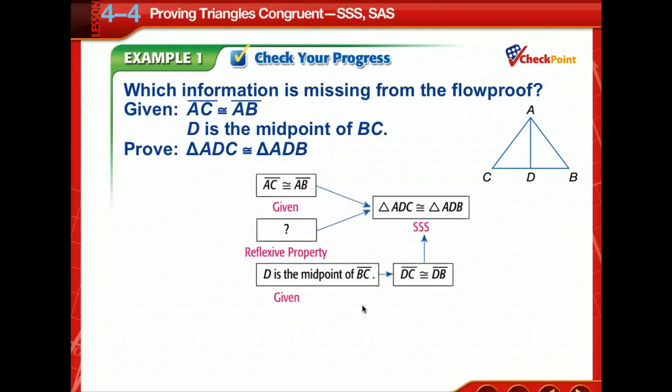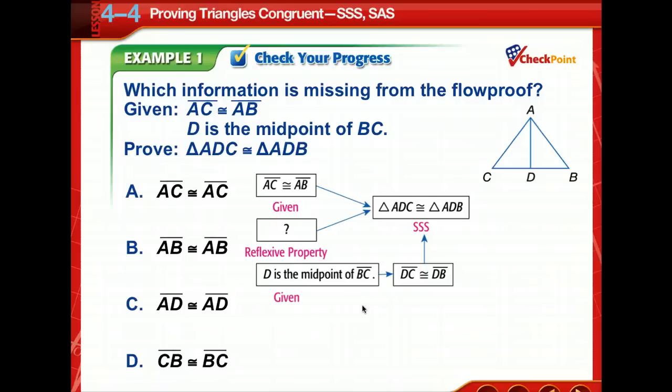Okay, time to check your progress. So pause for a moment, then come back and check your answer. That one was pretty easy, wasn't it? By reflexive property, we knew that AD is congruent to AD. So we've got AC and AB. There's one side. We've got DC and DB. There's another side. So we're just left with this last side to prove, and it's reflexive.